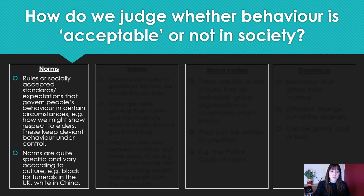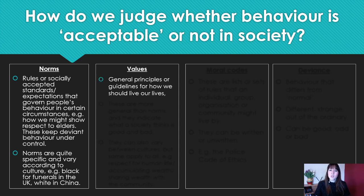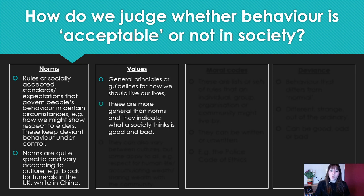Norms are quite specific and vary according to culture. For example, we wear black at funerals, whereas in China they wear white. So norms are what's socially acceptable within the culture that you're in. Values are principles or guidelines for how you should live your life. They are more general than norms — norms are quite specific, whereas values are more general about what society thinks is good and bad.